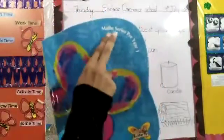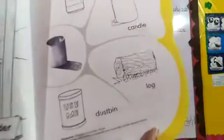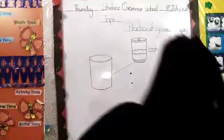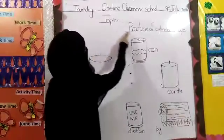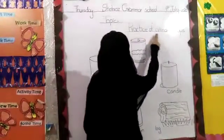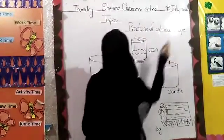Assalamu alaikum children. Math series prayer 1, page number 9. Topic: Practice of Cylinder Shape.